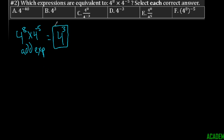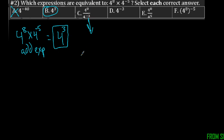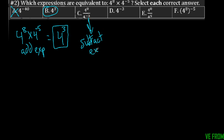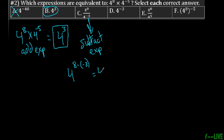Right away I can say it can't be the first one, because we're not multiplying the exponents together — we're just adding them. However, the second one is good, so we're going to pick that one. For C, when we're dividing with the same base we subtract exponents, so we do four to the eighth minus a negative three, which is the same as adding three — that would be four to the eleventh, which is not what we're looking for.